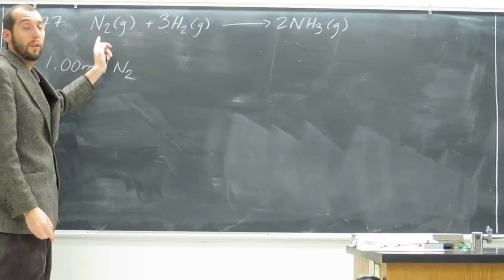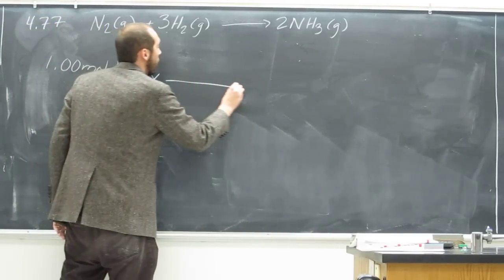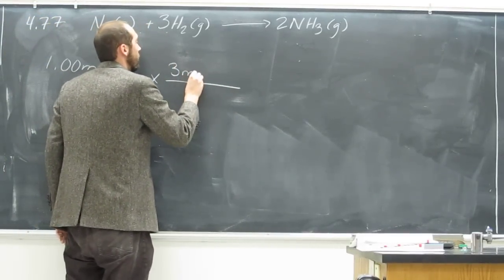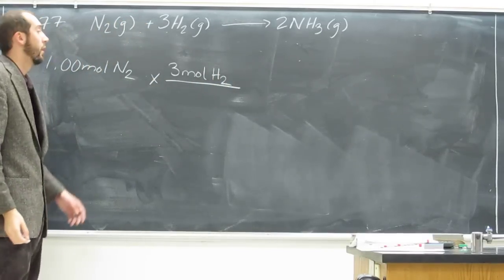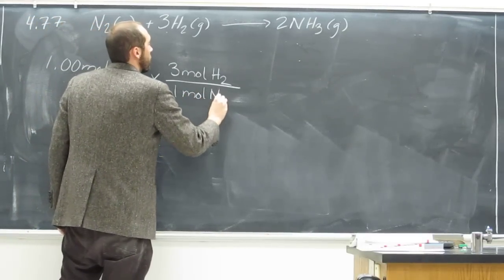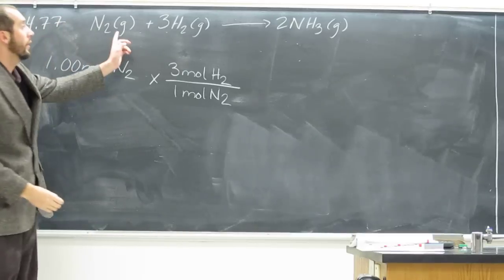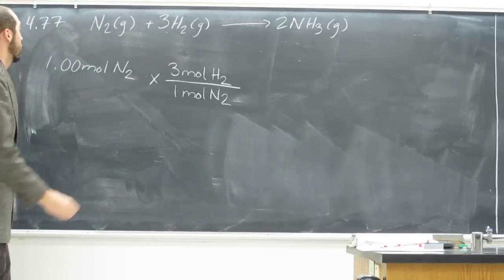3 moles of hydrogen to 1 mole of nitrogen. Of course, we want to put the 3 moles of hydrogen on the top and divide that by 1 mole of nitrogen. We get that directly from the chemical equation. There's a 1 to 3 ratio of these two things.